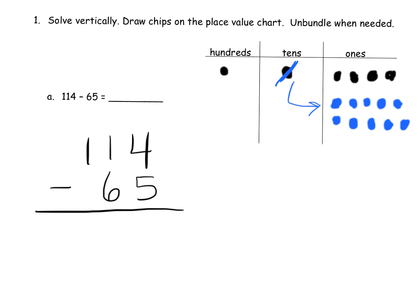So I'm going to record what we just did over here. We unbundled the 10, now we have zero 10s — see, we unbundled it, now we have no 10s left over. And instead of having four ones, we now have 14 ones. Now it says take away five, so we're going to cross off five: one, two, three, four, five.